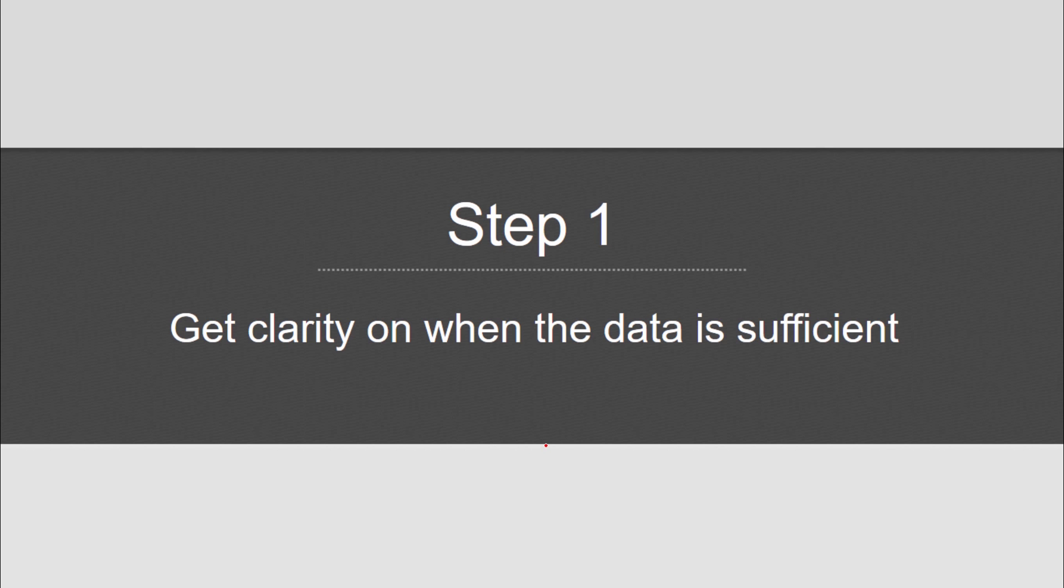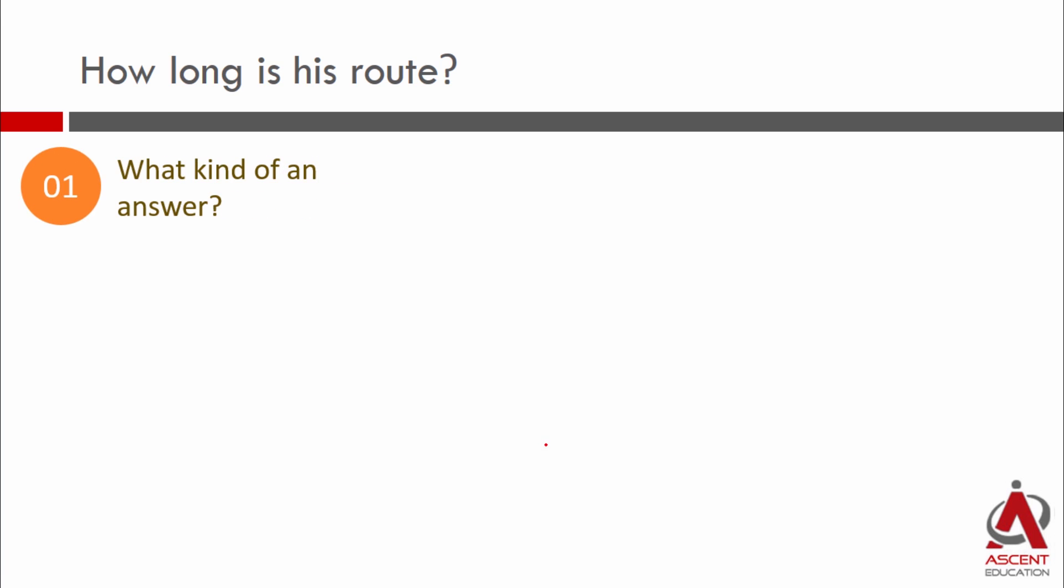Before we start solving it, we'll get clarity on three questions that we usually have. The first one is what kind of answer will this question get. In the question, how long is this route? So what distance has he jogged is what we'll have to find out. So the answer should be something like he jogged for 10 kilometers or 8 miles, followed by a unit of distance. That is how the answer to this question is going to be.